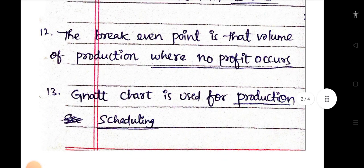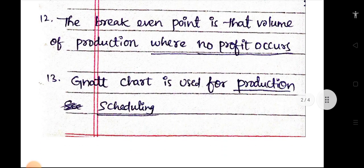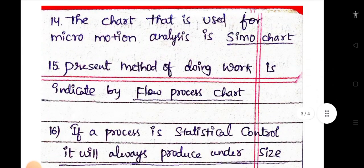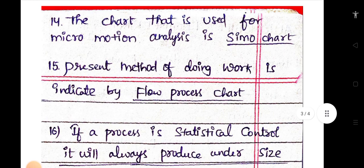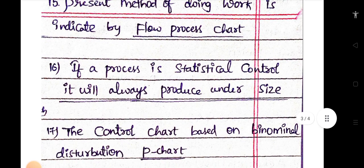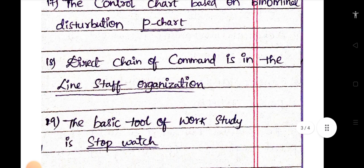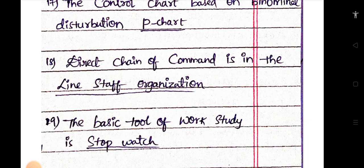The break-even point is that volume of production where no profit occurs. NAT chart is used for production scheduling. The chart used for micro motion analysis is a SEMO chart. The present method of doing work is indicated by a flow process chart. If a process is in statistical control, it will always produce undersize.